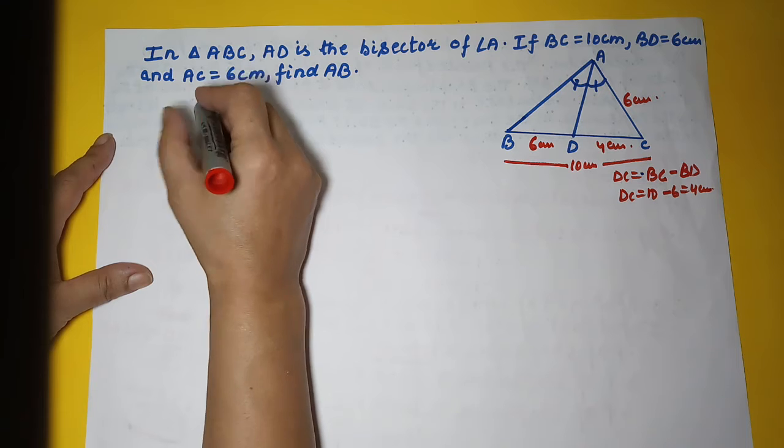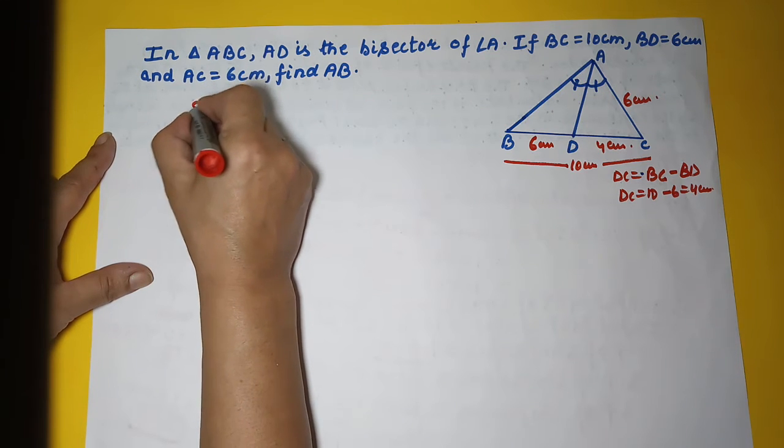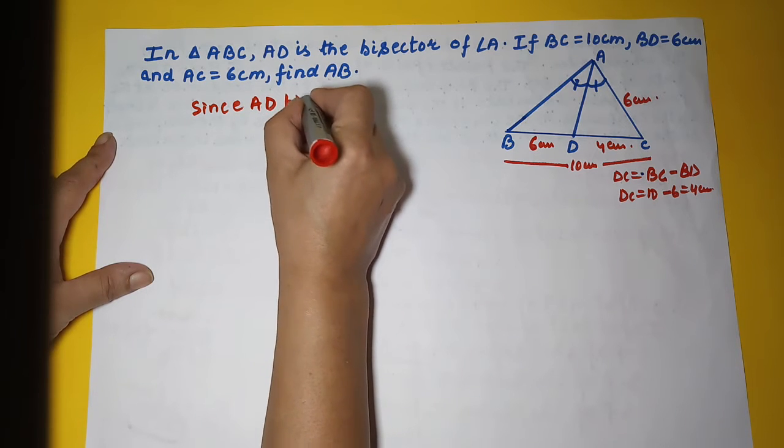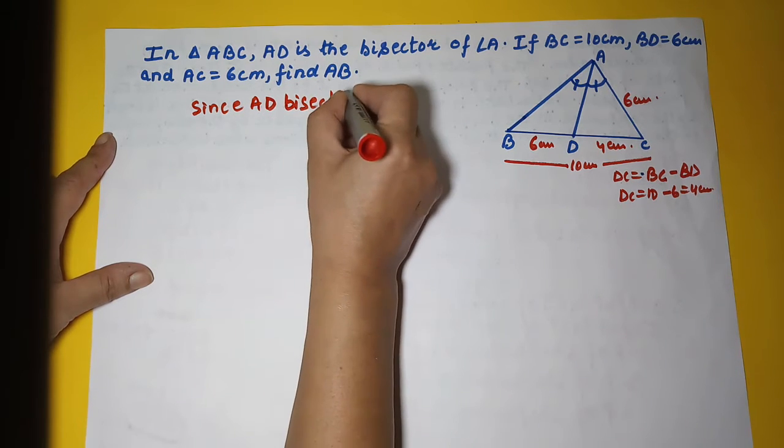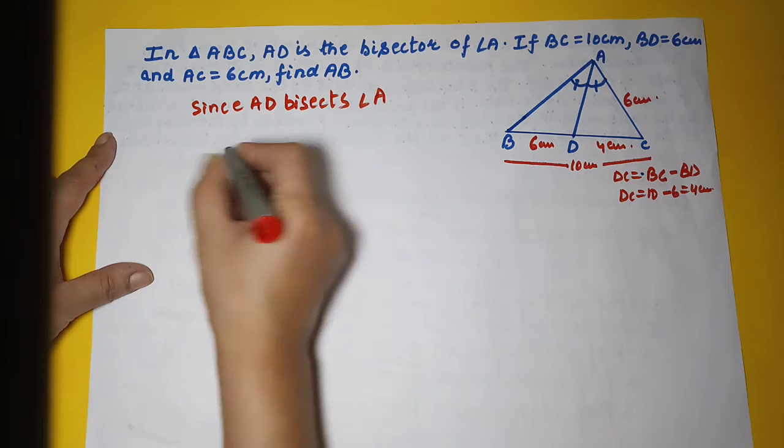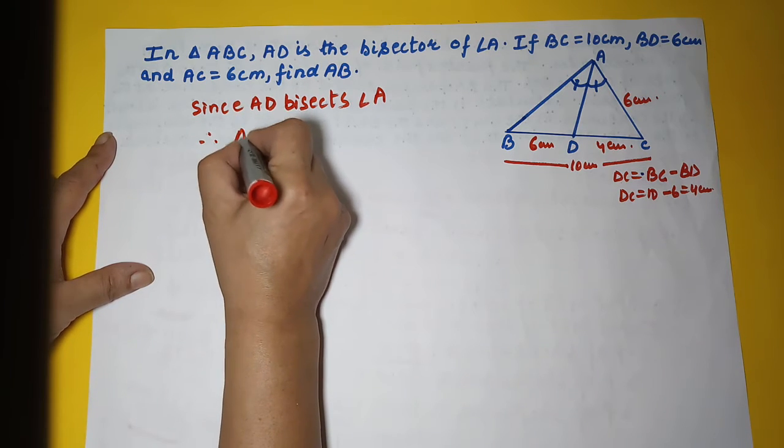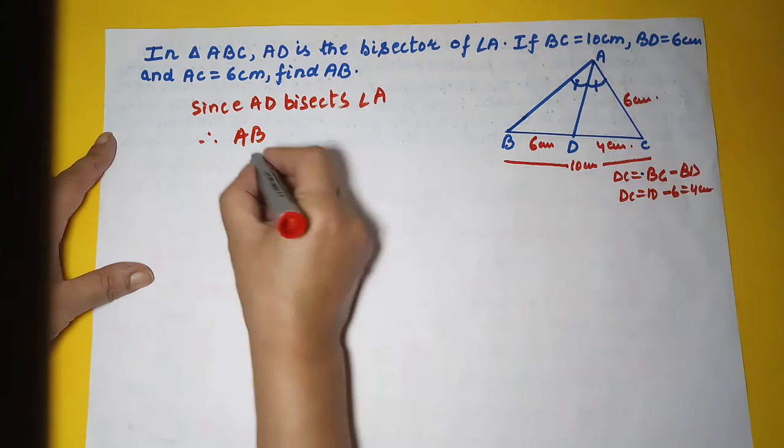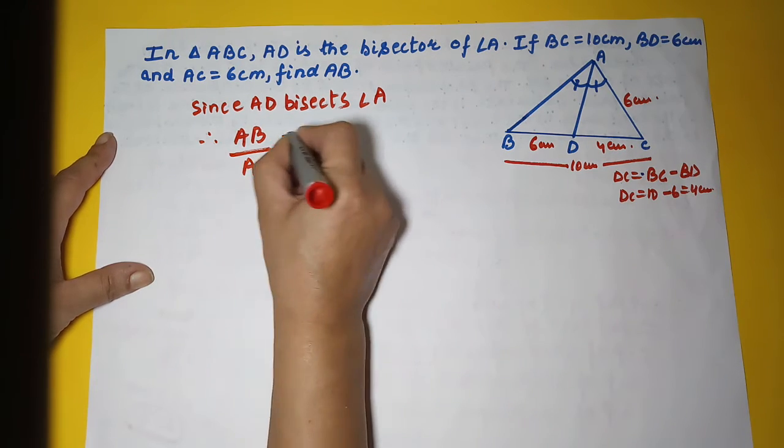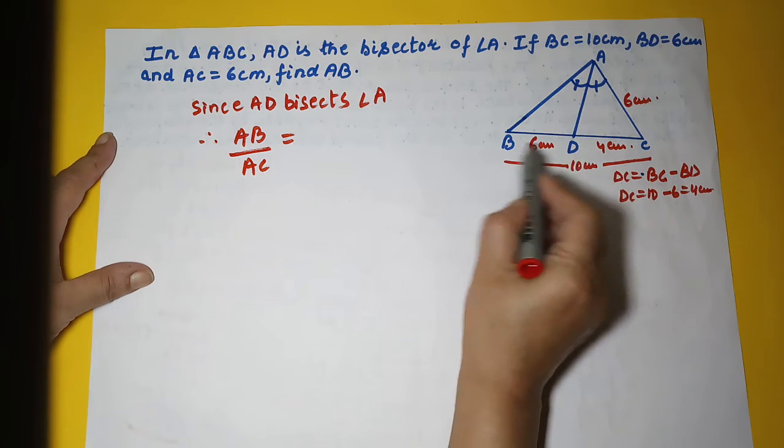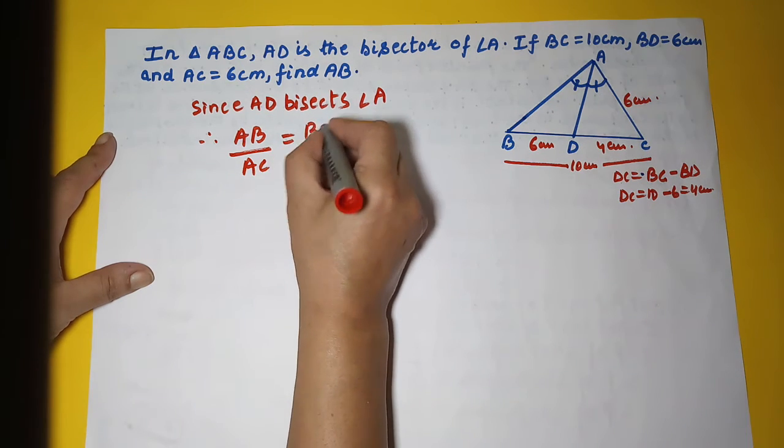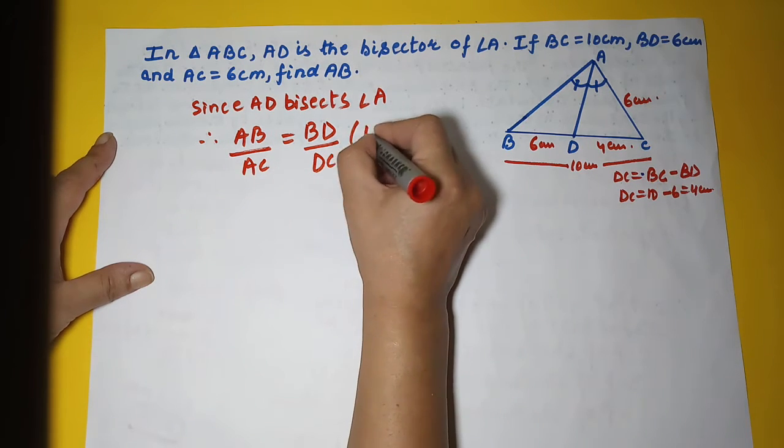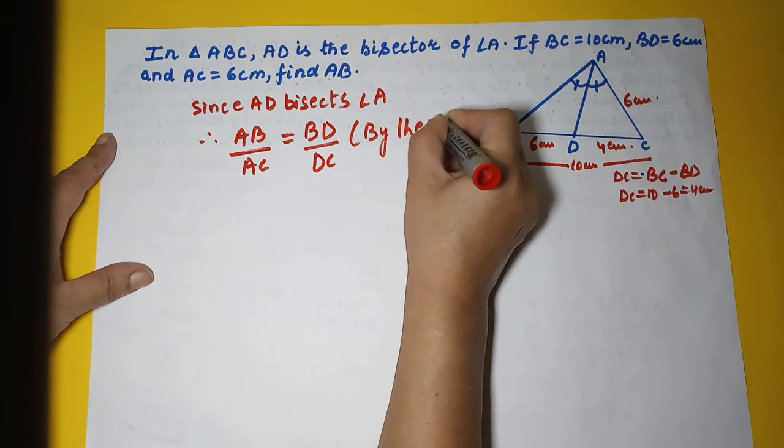So we will write, since AD bisects angle A, therefore AB upon AC is equal to BD upon DC. By theorem we have done this.